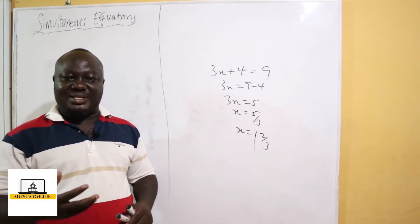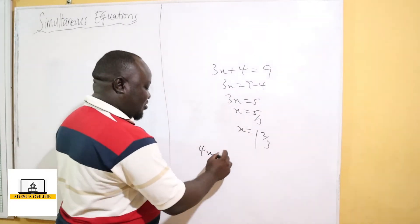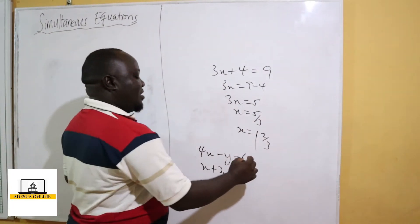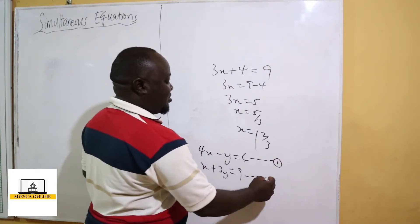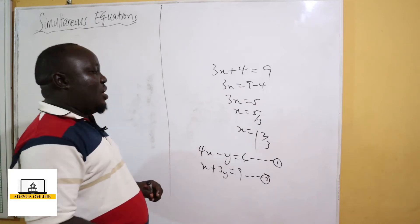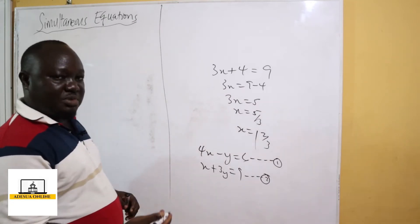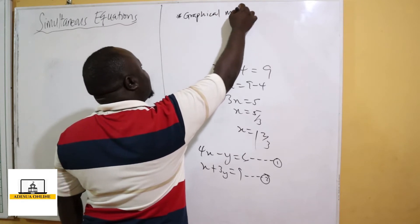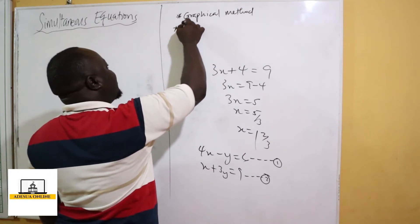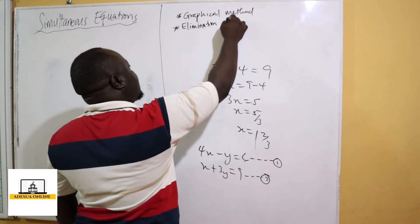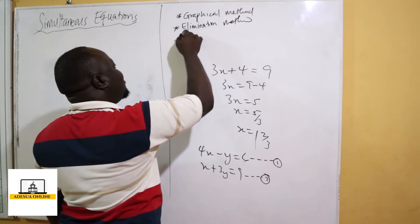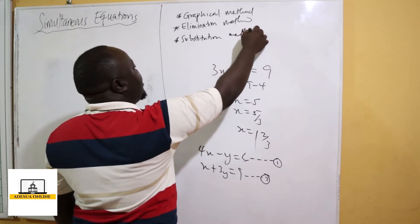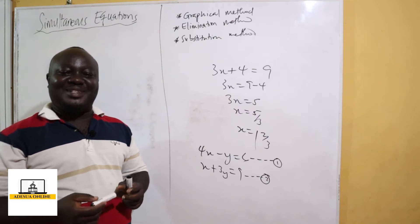In a situation where you are given two variables x and y, you can be given: 4x minus y equals 6, and x plus 3y equals 9 — you are supposed to solve for both x and y. We identify this as equation 1 and this as equation 2. In this situation, we have three different methods of solving simultaneous equations: the graphical method, the elimination method, and the substitution method.